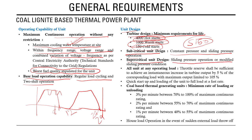At any operating load, the throttle reserve must be sufficient to achieve an instantaneous increase in turbine output of 5 percent of the corresponding load, with maximum output up to 105 percent. This relates to free governor mode operation — if a unit is running at 100 percent, it must still be able to provide an additional 5 percent output, meaning sufficient steam reserve must be available at the back end of the governor.